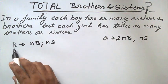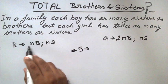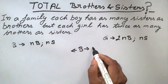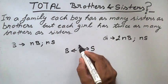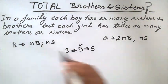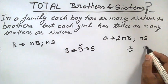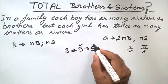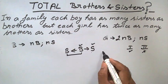Starting from the boy, we need an equal number of brothers and sisters to satisfy the first condition. So we take one sister and one brother. Now, for this boy, there are equal numbers of brothers and sisters, so the first condition is satisfied. But the second condition is not satisfied, as the girl has two brothers and no sister.